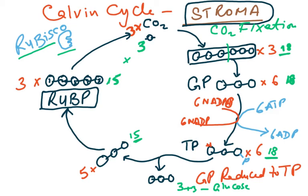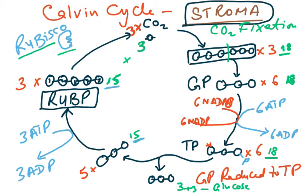So 18 minus 3 is 15, giving us five-carbon units to regenerate RuBP. In order to regenerate RuBP, another three ATP molecules are needed. We needed six ATP earlier and three here — totalling nine ATP. We only needed six NADPH. So the totals are nine ATP and six NADPH.